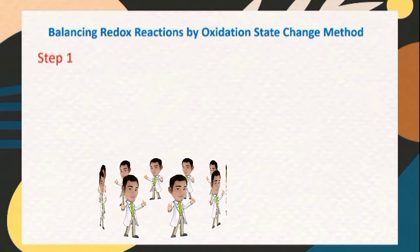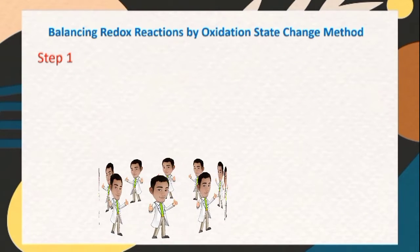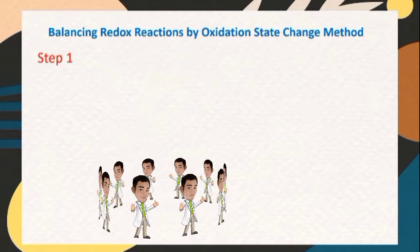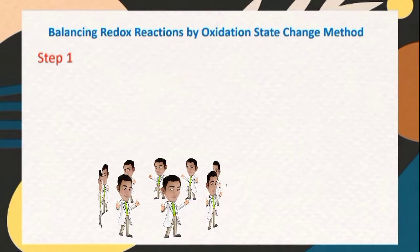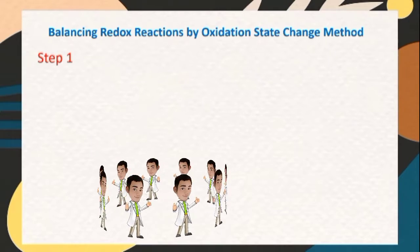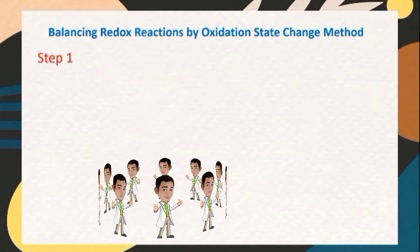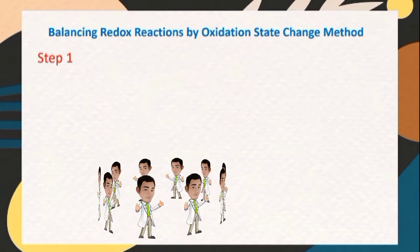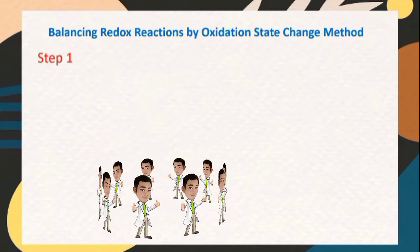We are going to balance the following redox reaction by the oxidation state change method. First step is assign oxidation states to all elements applying the basic rules discussed in the previous video entitled assigning oxidation states.